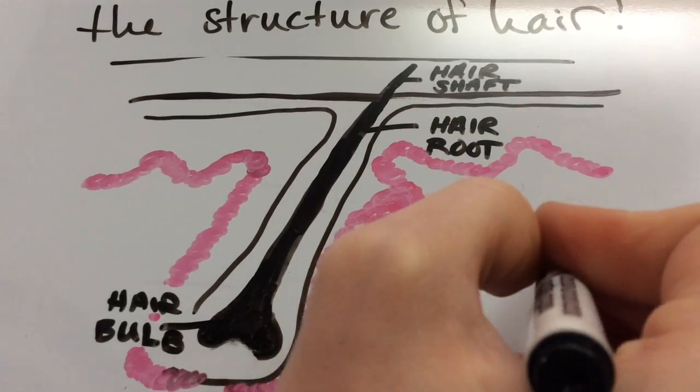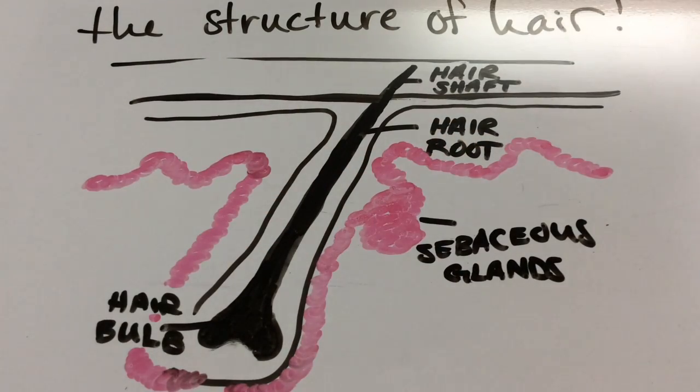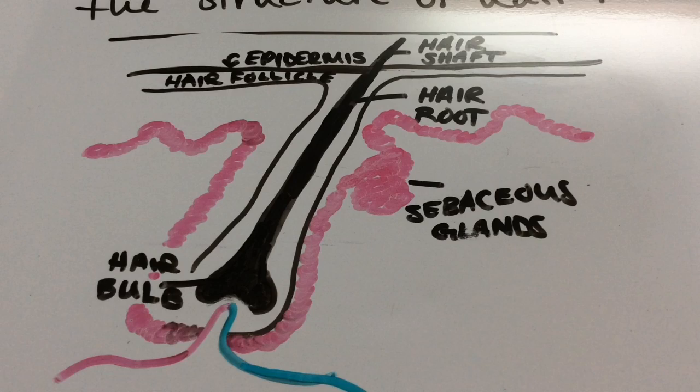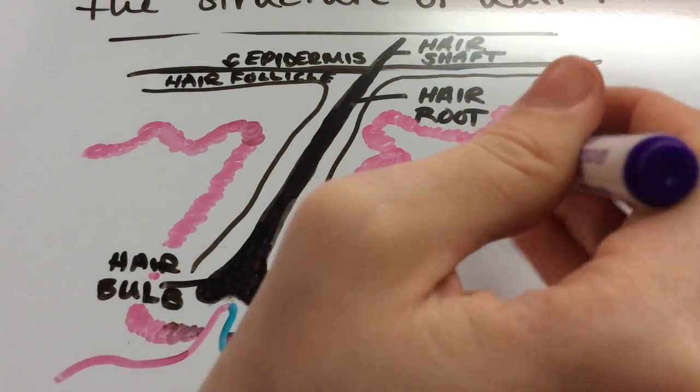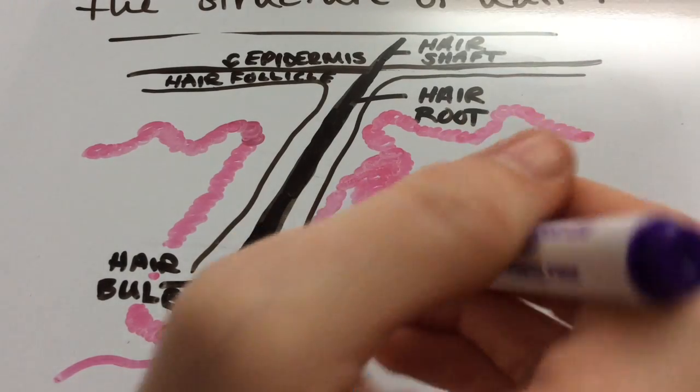Next, I draw the dermal papilla, but don't label it until later. The dermal papilla is located at the base of the hair follicle and fits into the bulb. It contains blood and nerve supply that provides nutrients needed for hair growth.